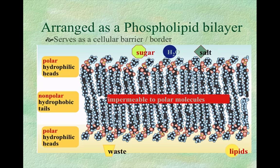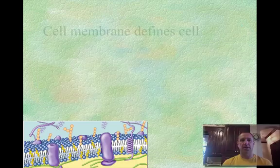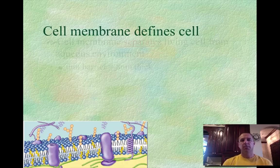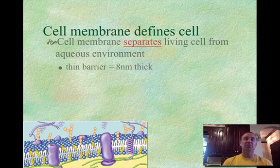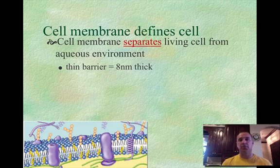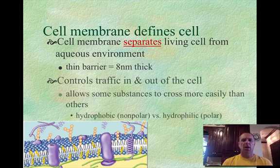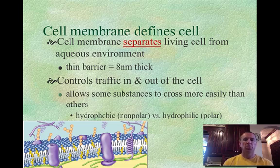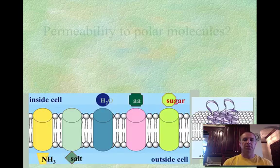The membrane gives the cell a boundary — a cellular barrier between the inside and outside of the cell. The cell membrane actually defines the cell; it's what separates the living inside from the outside, even though it is very thin, only about eight nanometers thick. But it does effectively control what comes in and out, because of this non-polar versus polar distinction.